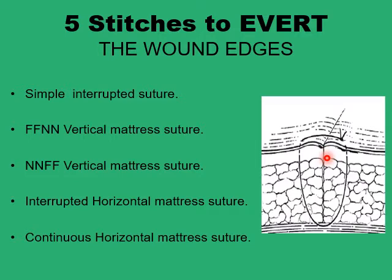These are the two things that eversion of the wound is meant to correct. You should have more tissue in the base than in the upper part of the loop, and you should have a slight eversion of the epidermal layer and the whole skin so as to provide maximum opposition of the dermal layer to produce good healing.